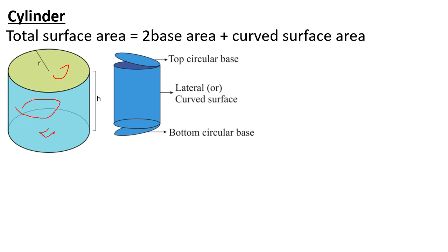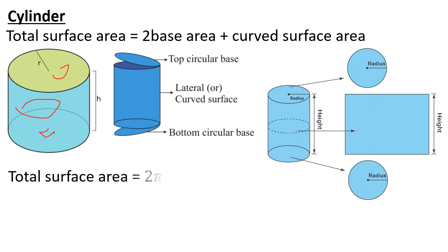The total surface area has 2 bases — the top circular and the bottom circular — plus the curved surface. The formula is 2πr² for the two circular bases, plus the curved surface area 2πr.